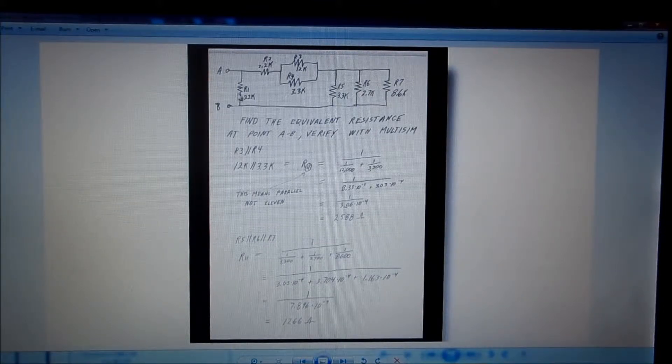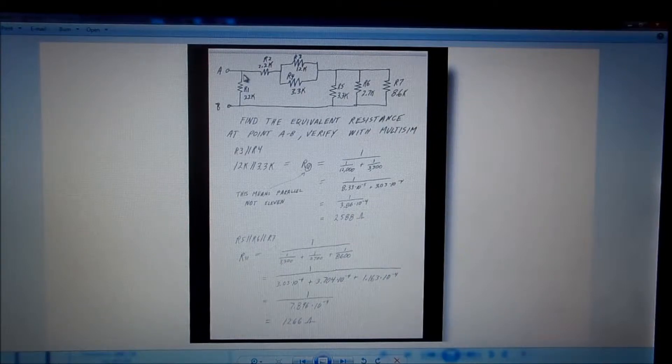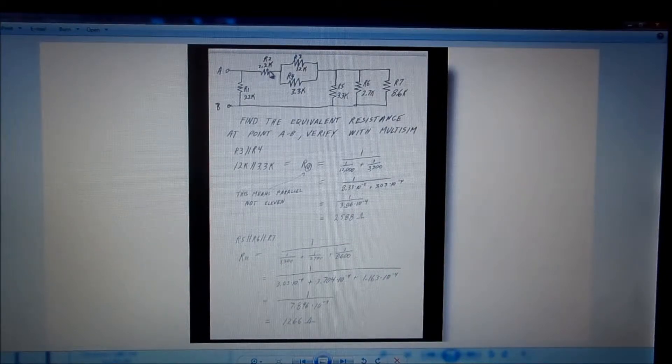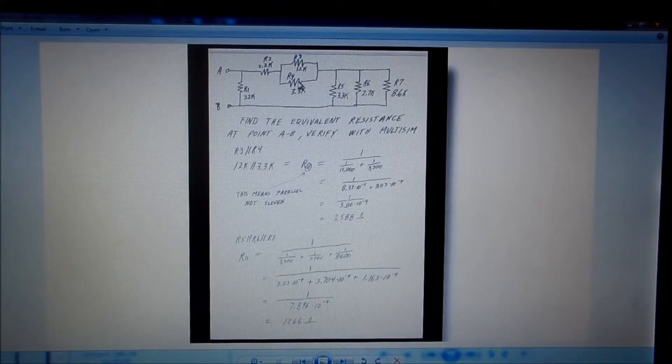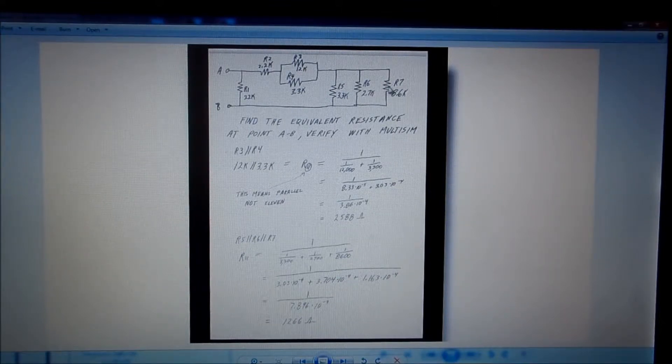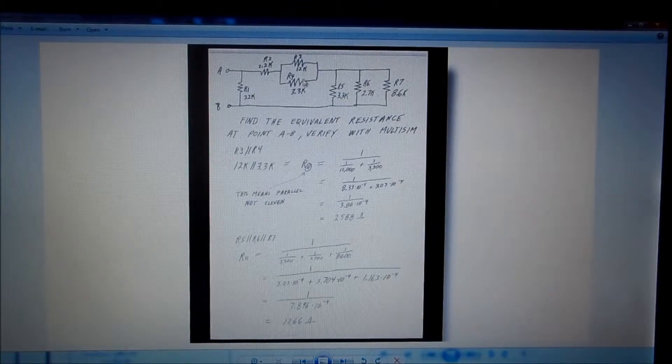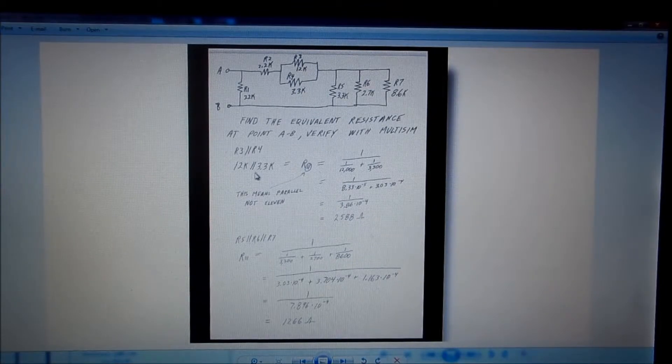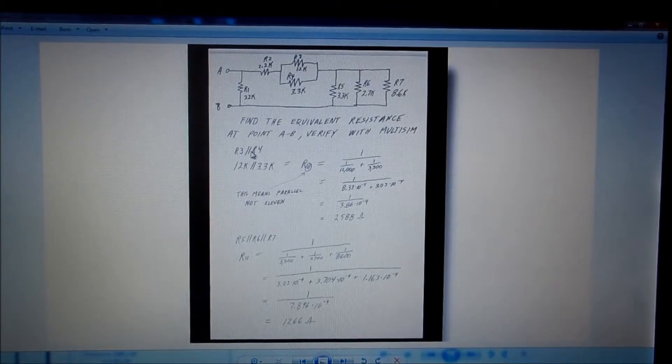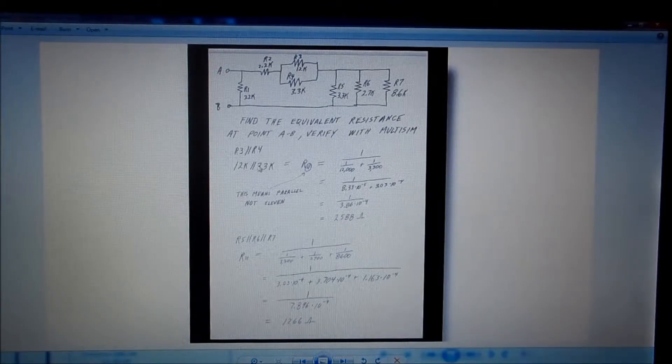So what we've got here is in parallel, and then we start out with this 2.2. Now these two are in parallel with each other, and these three are all in parallel with each other. So the first thing we need to do is find out what these two in parallel comes out to be, and we're putting R3 in parallel with R4.